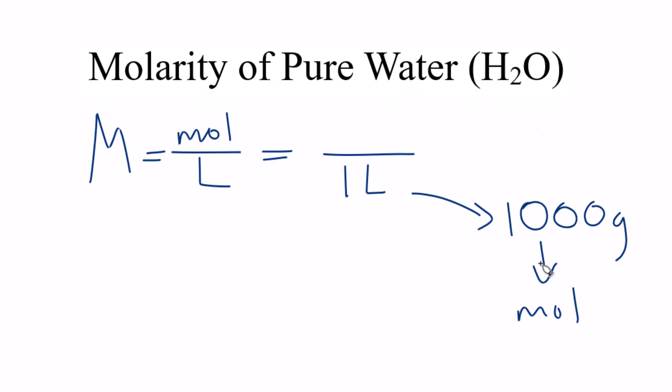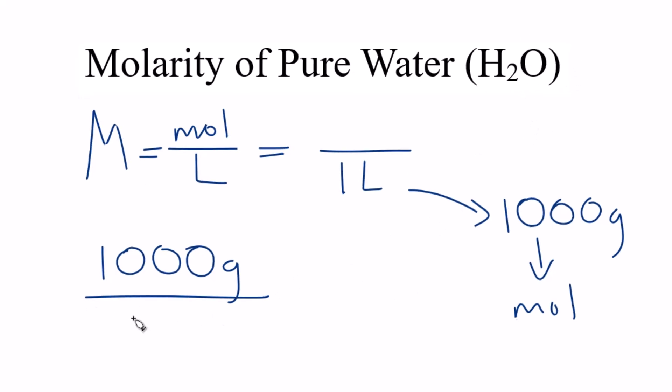So not too bad. So let's get 1000 grams of water to moles. When we go from grams to moles, we divide by the molar mass of the substance, in this case H2O. And if you find the molar mass for water, you'll see that that's 18.02, and the units are grams per mole.